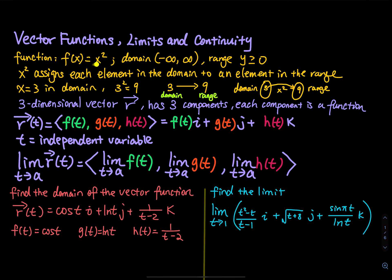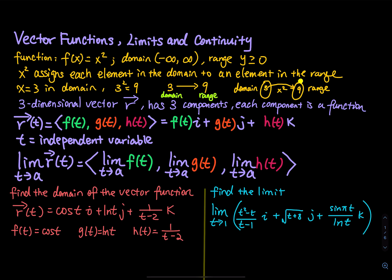Let's say we have a function f of x equals x squared. The domain of this parabola is x can be any value, so from negative infinity to positive infinity. For the range, y is always greater than or equal to zero. The vertex of the parabola is at (0, 0), and as x either increases or decreases, y goes all the way up to positive infinity. So the minimum y value is zero, and y is always zero or above. This function x squared assigns each element in the domain to an element in the range.